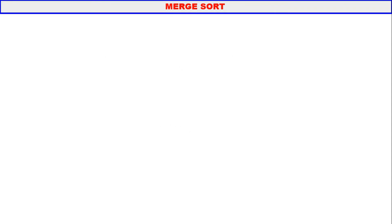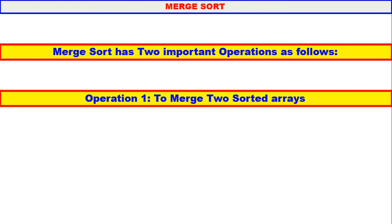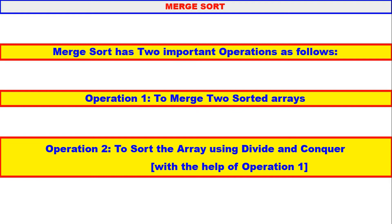In this video we will discuss merge sort. Merge sort has two important operations. The first operation is to merge two sorted arrays. In operation one we are not doing any sorting at all — we are just merging two already sorted arrays. This operation is very important; almost 90% of merge sort is in operation one. In operation two we sort the array using divide and conquer, and we also use operation one to merge two sorted arrays.